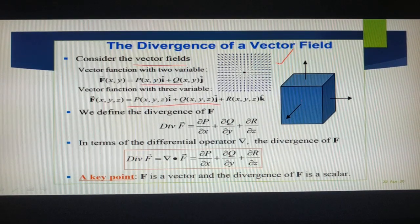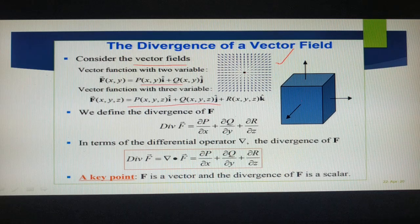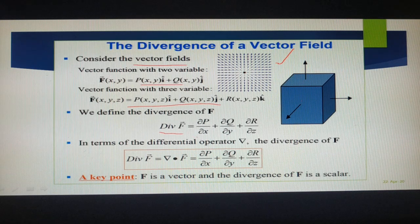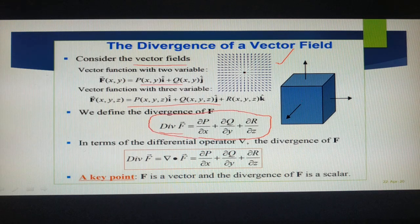Mathematically, I am defining: there is a vector field F. F may be velocity or force. Divergence of F — DIV is the short name — DIV of F bar, which we write as ∂P/∂x + ∂Q/∂y + ∂R/∂z. This gives some scalar value.